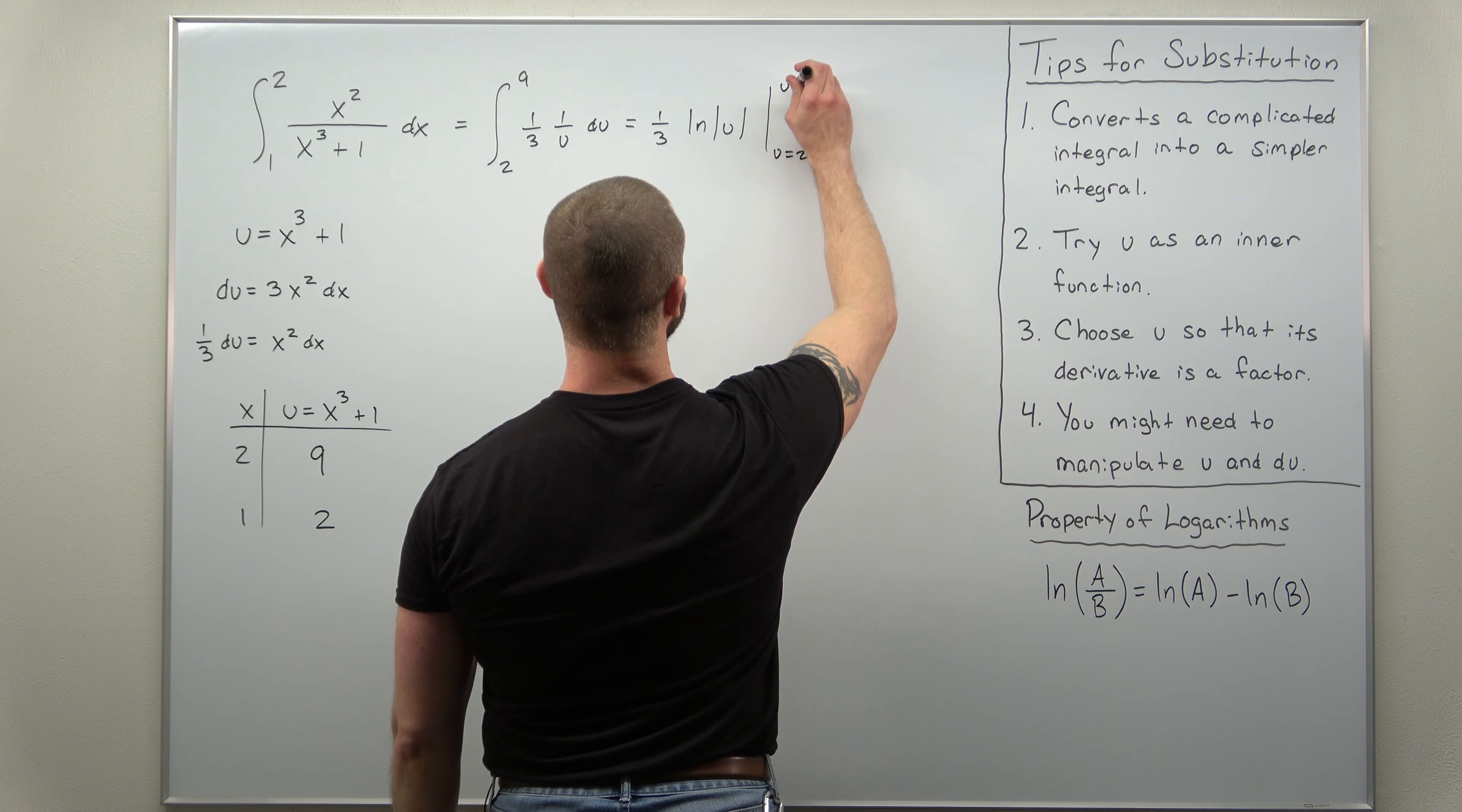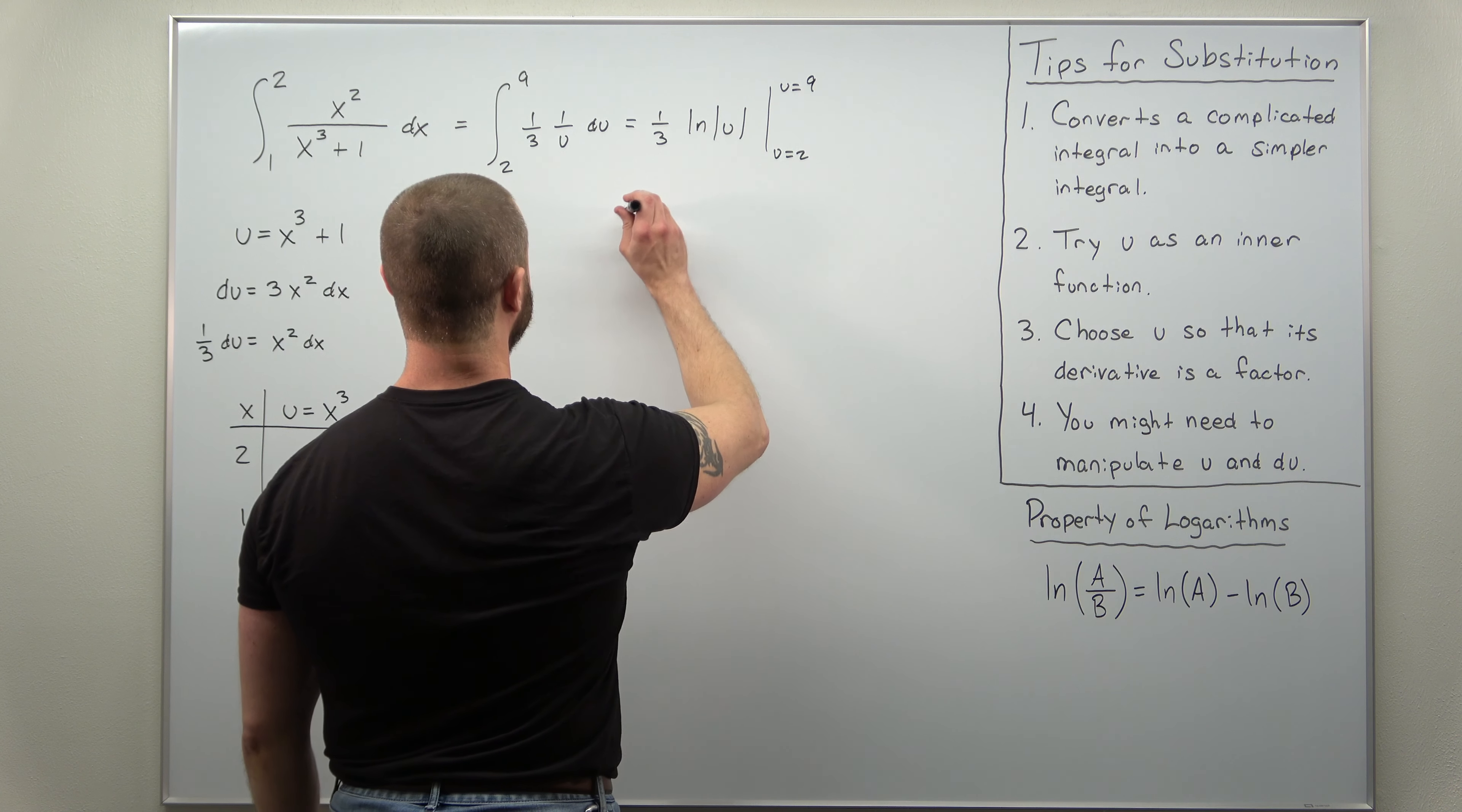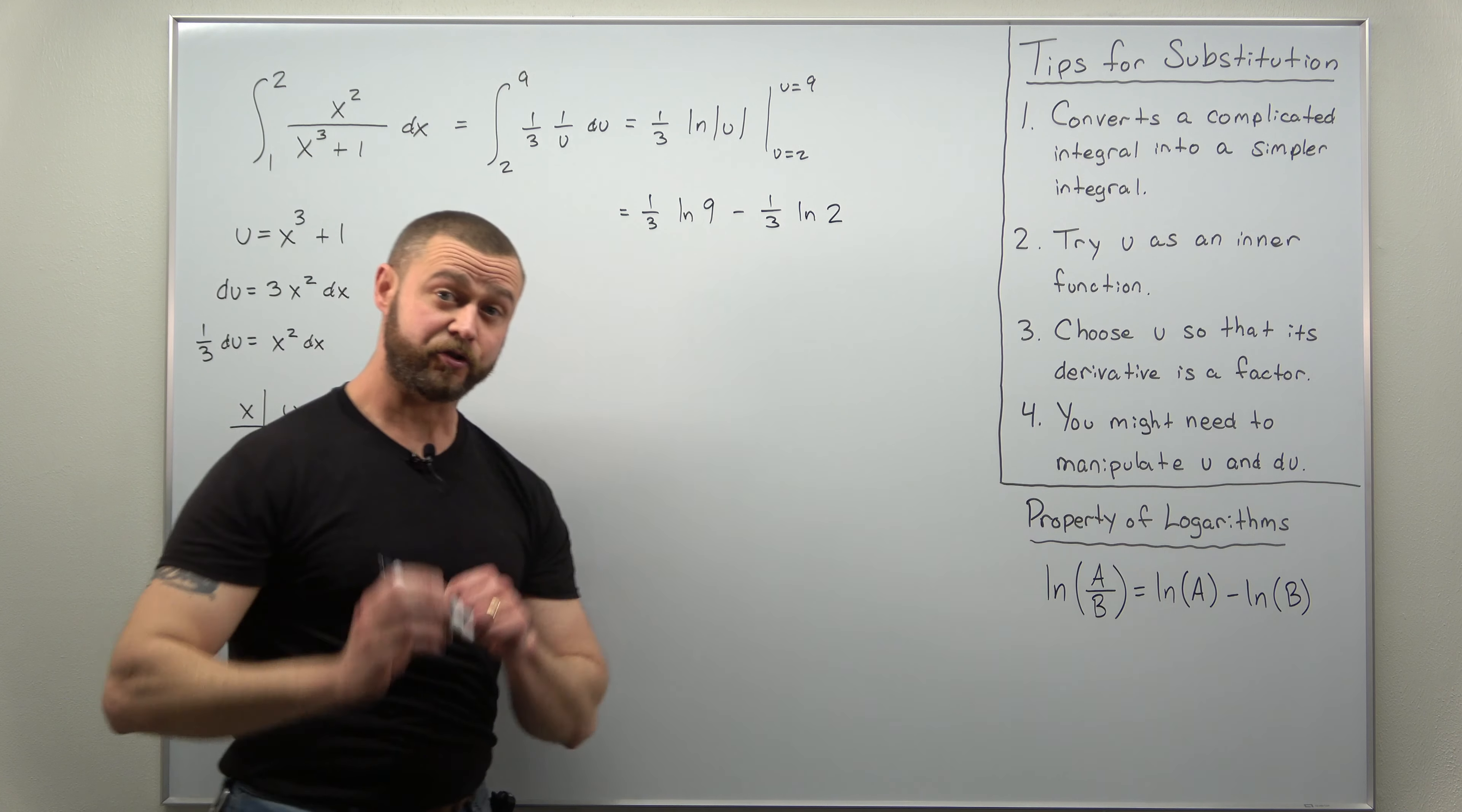So we're going to plug in basically using the fundamental theorem of calculus. Plug in u as 9 and then subtract when you plug in u as 2. So if we do that we'll get 1 third natural log of 9 minus 1 third natural log of 2.